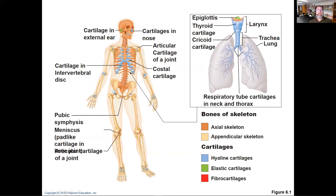In the image, blue represents hyaline cartilage — it's at the ends of our joints, the connections of the ribs, and cartilage in our nose. The red represents fibrocartilage, found in the intervertebral discs as well as the pubic symphysis.